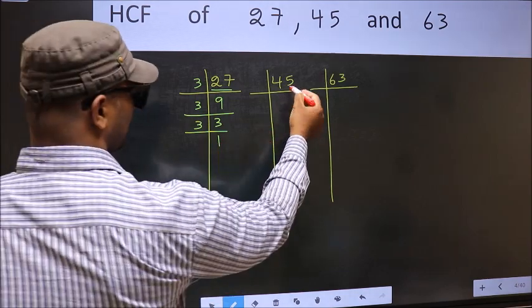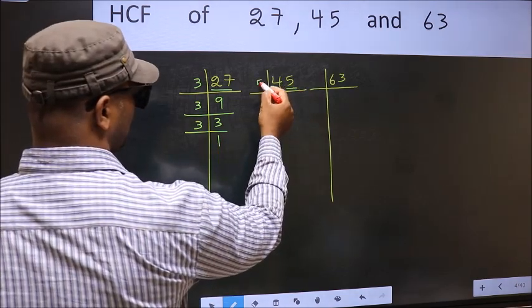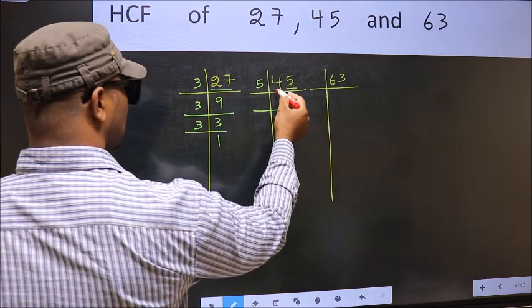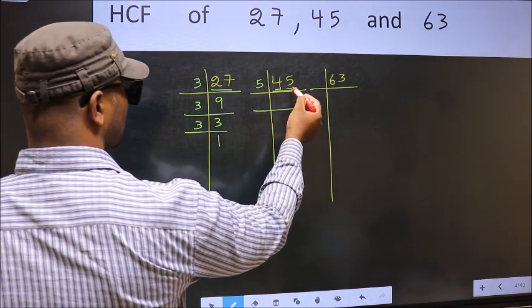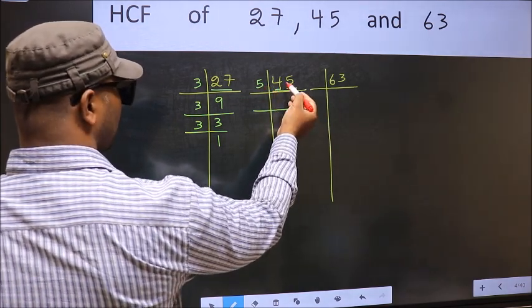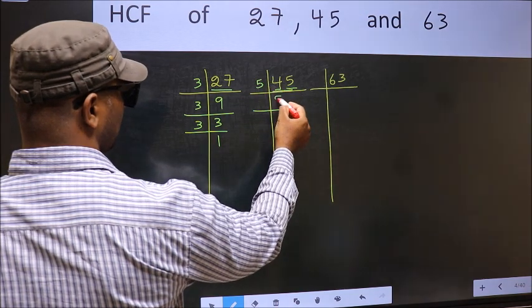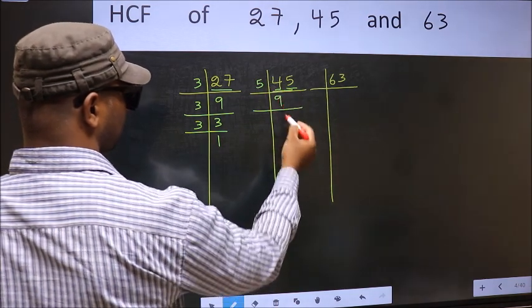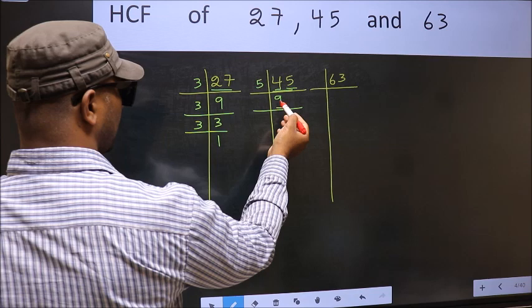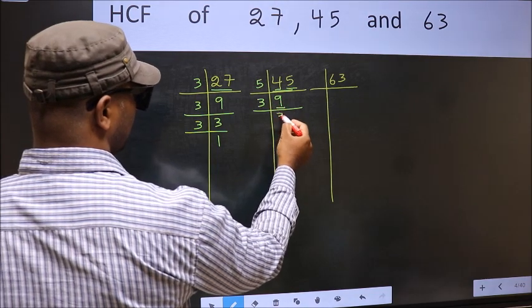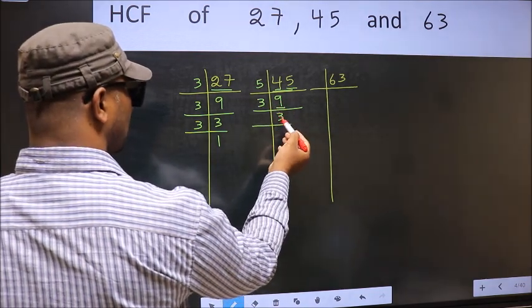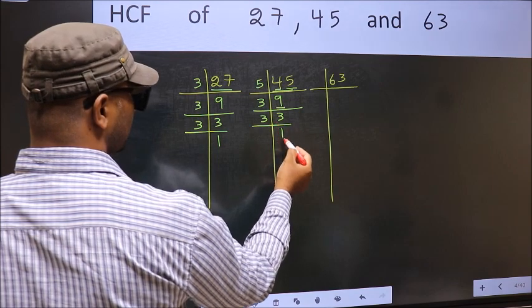Now the other number. Last digit 5 so take 5. First number 4 smaller than 5 so 2 numbers, 45. When do we get 45 in the 5 table? 5 times 9, 45. Now 9. 9 is 3 times 3. Now 3 is a prime number so 3 times 1.